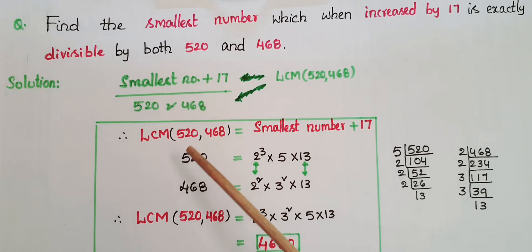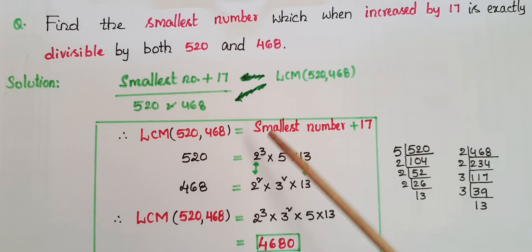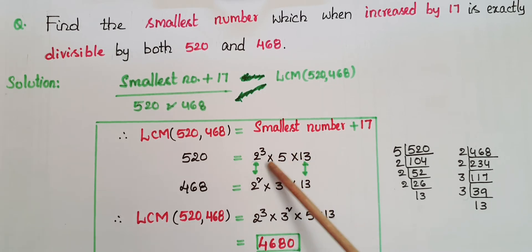So 520 you can express as product of these prime factors: 2³ × 5 × 13. So this is the prime factorization for 520. And 468 you can express as 2² × 3² × 13.